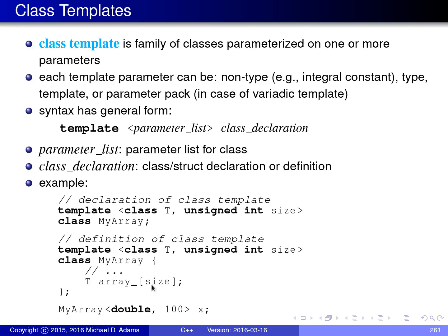In the definition of the class template, the template has a data member called array underscore, which is an array with size elements of type T. The parameter T indicates what type is used for the elements, and size — the second template parameter, an unsigned int compile-time constant — gives the fixed size of the array. To create an object of this type, we write myarray with template parameters in angle brackets, for example myarray double 100, which instantiates an array of 100 elements of type double.